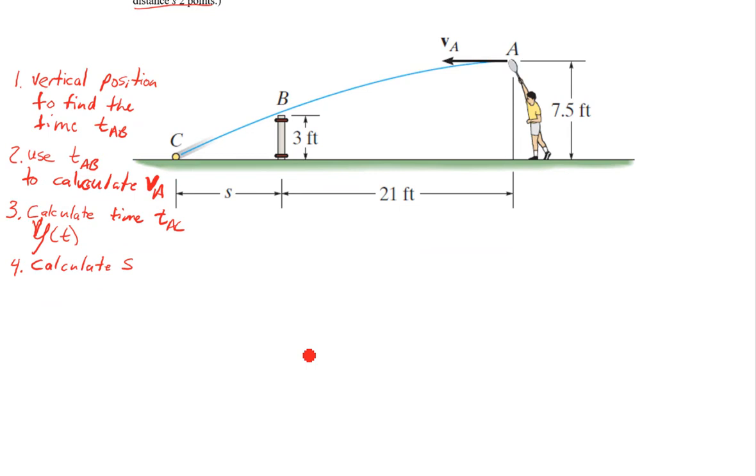So step one, vertical position. So we have here Y(t) equals our initial position plus V not Y times t. So our initial velocity times the time. Plus one half AC, constant acceleration, times t squared. And this is in the Y direction.